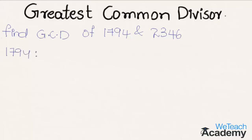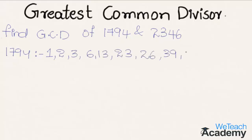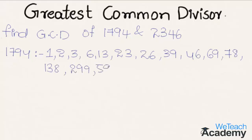First, let us consider the factors of 1794. The number 1794 is divisible by 1, 2, 3, 6, 13, 23, 26, 39, 46, 69, 78, 138, 299, 598, 897, and 1794 itself.